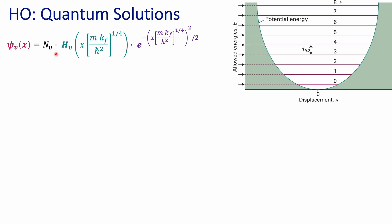Something interesting that is different from other systems we have studied before, like the particle in a box, is that the normalization constant is not a single value for every level. That value is still a constant, but it depends — it's going to change depending on the principal quantum number, epsilon here, the vibrational quantum number for my problem.